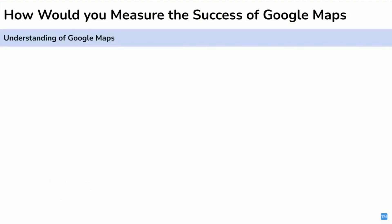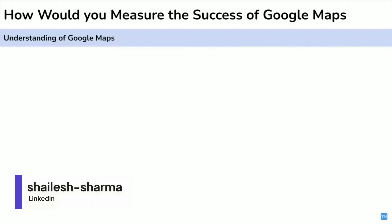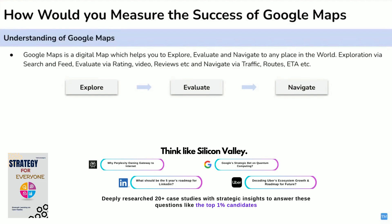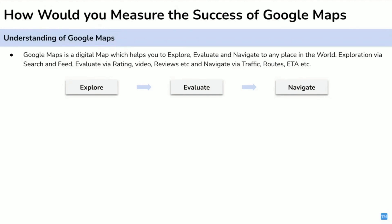As usual, we will clarify our understanding of Google Maps and show our strategic thinking. Google Maps is a digital map which helps you explore the world, evaluate, and then finally navigate to the destination. We have broken this down into: explore, evaluate, and navigate.